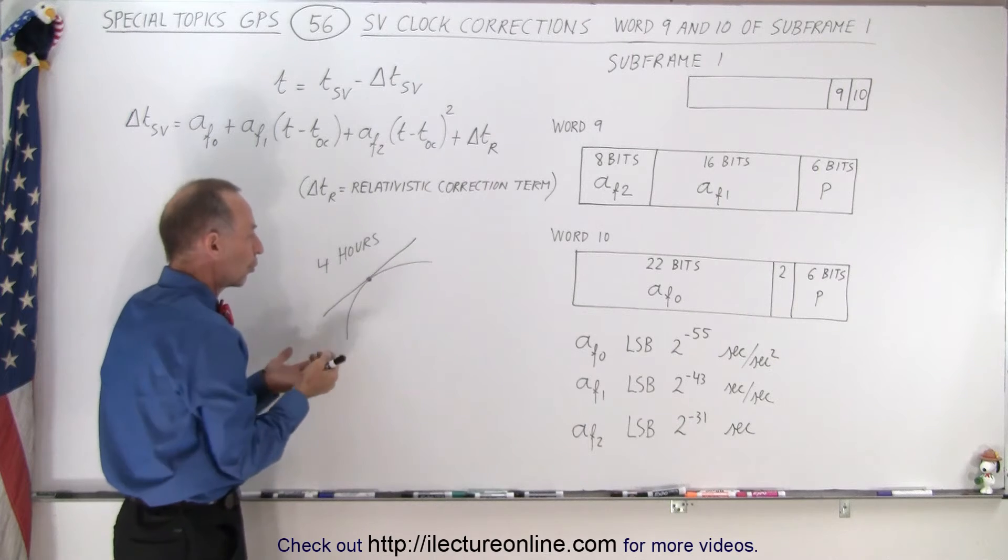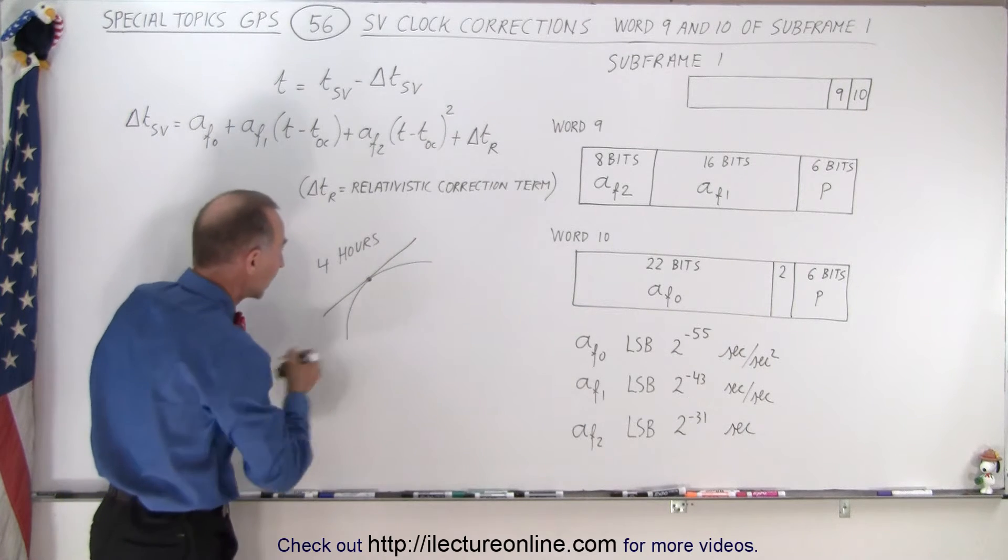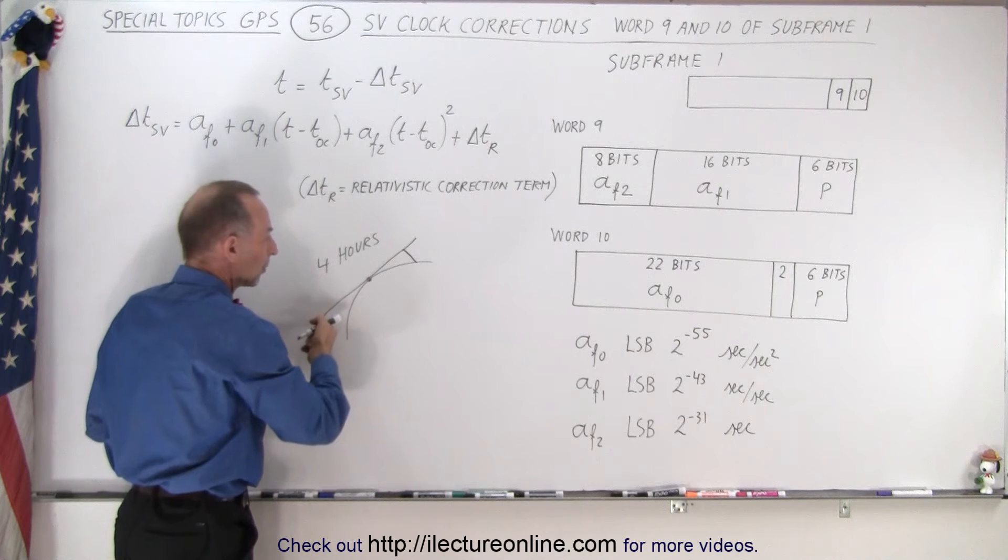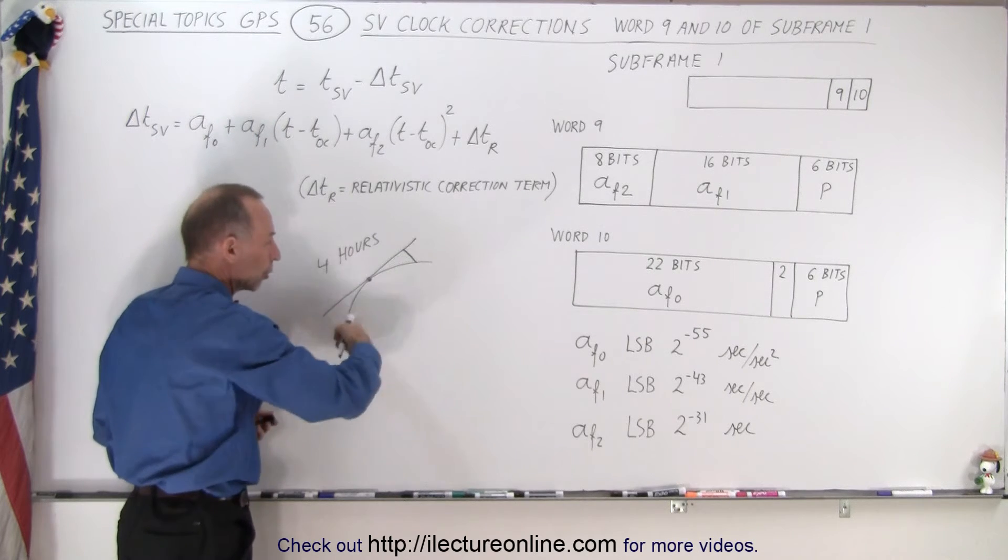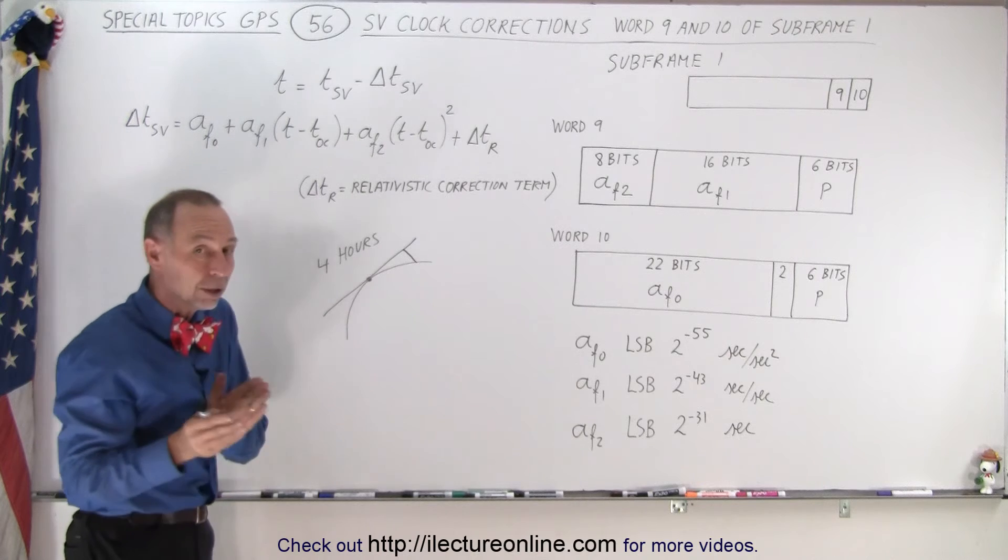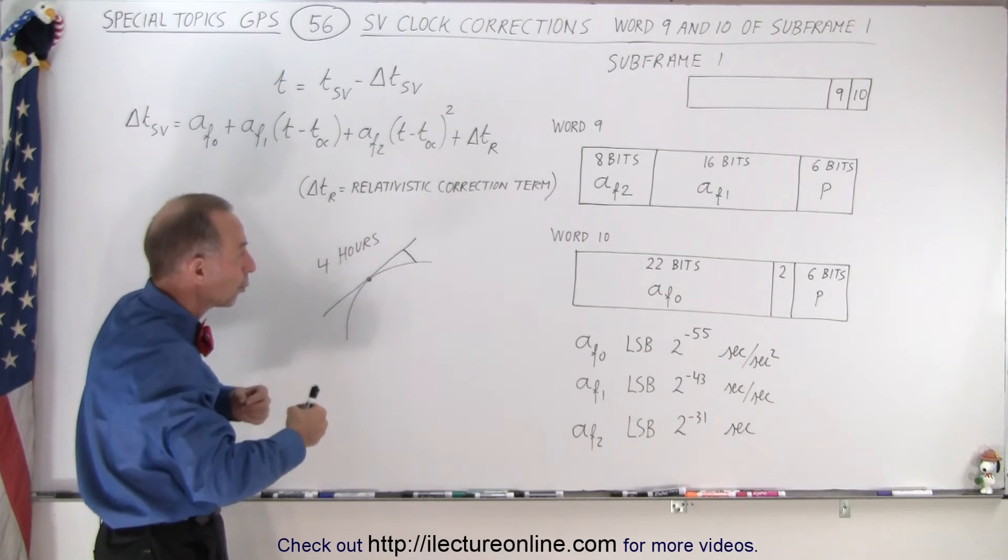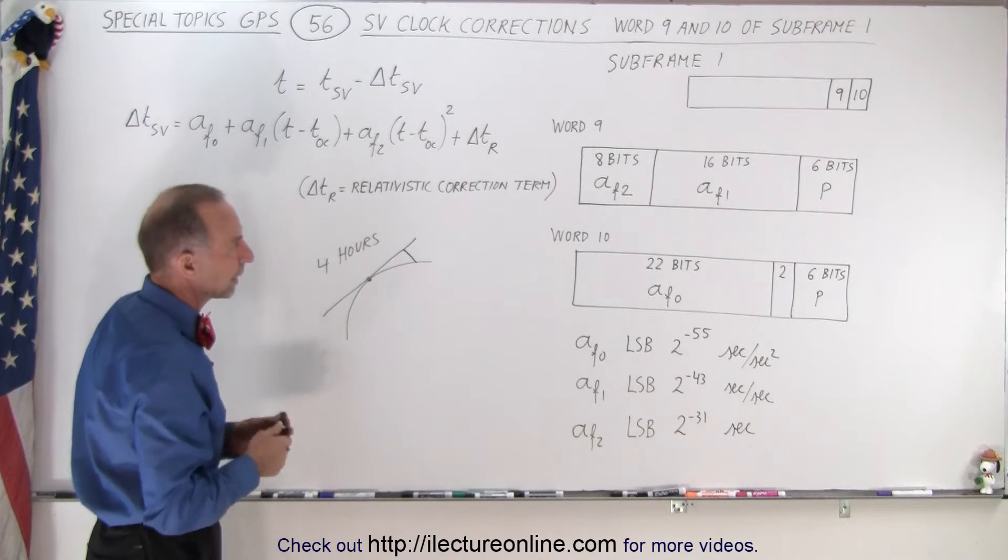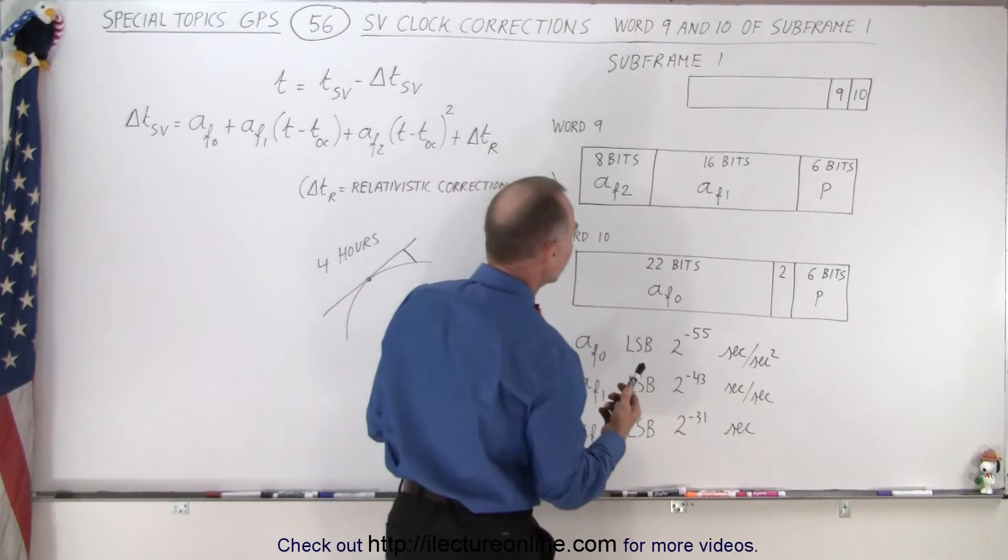We can then calculate what the time difference would be between the perfect orbit and the actual orbit as it occurs. We can then allow for that time difference and recalculate the exact ephemeris parameters for the satellite. So in word 9 and 10 what does it contain?